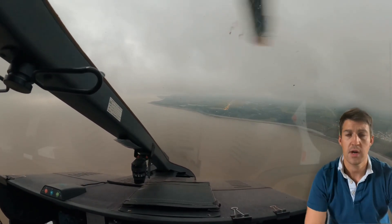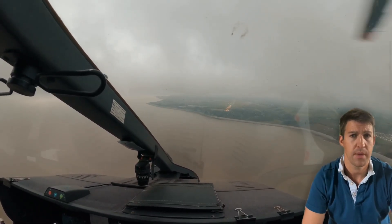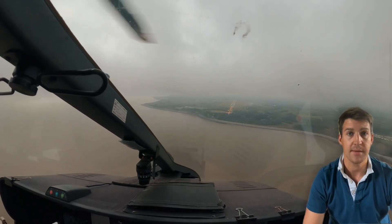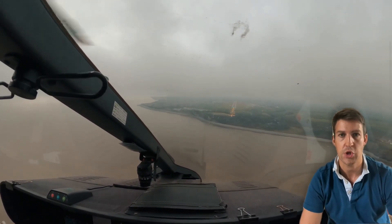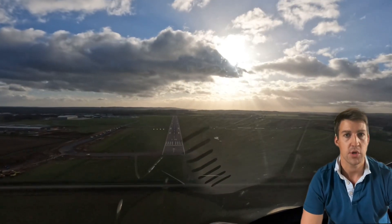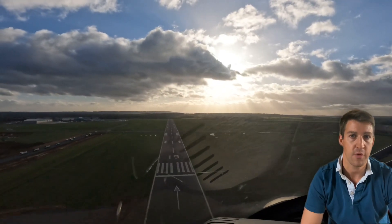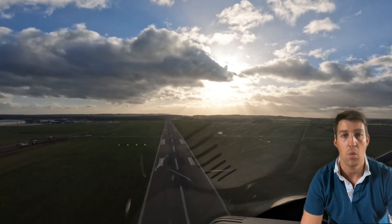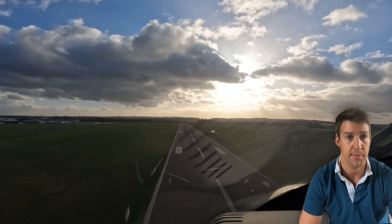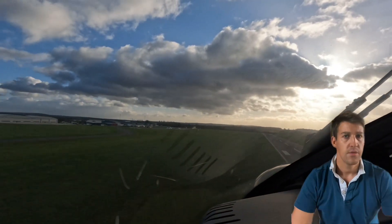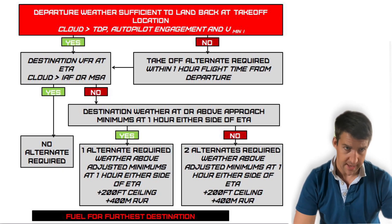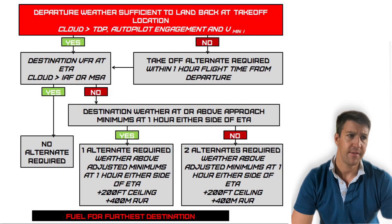However, if the weather forecast for your destination isn't favourable and the worst of the predicted weather is below the minimums for approach, or indeed there isn't a weather forecast available, then you need to select two alternate destinations. In order for an alternate airport to be appropriate, you need to check that the weather forecast for the alternate for a period one hour either side of your planned arrival time is above the minimums required for the instrument approach you plan to fly. You have to adjust the published approach minimums in both runway visibility and cloud base to provide a safety factor.